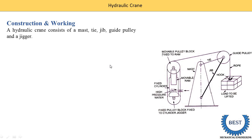A hydraulic crane consists of a mast — this part is the main support part of the hydraulic crane, known as the mast (M-A-S-T). Another component is the tie. The tie is connected between the guide pulley and the mast. Another part is known as the jib. It also connects the mast and the guide wheels. So, the jib and tie are our operating mechanisms.